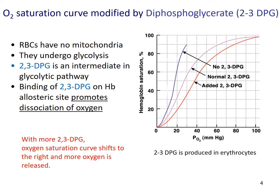The last factor we'll discuss is 2,3-DPG, or 2,3-diphosphoglycerate. Red blood cells have no mitochondria and can only obtain energy by running glycolysis, and 2,3-DPG is an intermediate substrate within the glycolytic pathway. The binding of 2,3-DPG on the hemoglobin at its allosteric site will promote the release of oxygen — in other words, it pushes the curve towards the right hand side. Conversely, with little or no 2,3-DPG, the curve shifts towards the left hand side, favouring oxygen binding or oxygen loading.